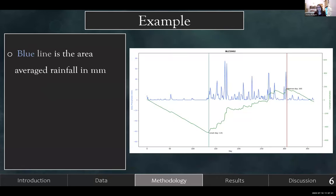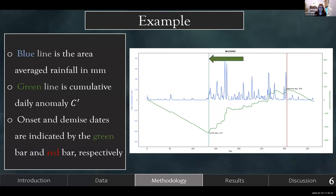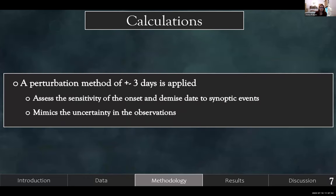This is best displayed graphically. The blue line is the area-average rainfall in millimeters, and the green line is the cumulative anomaly. The onset and demise dates are indicated by the green bar and the red bar, respectively. The onset date is the minimum of the cumulative anomaly, and the demise date is the maximum — the rainy season lies between these two. This example is Belize in 2022. Additionally, a perturbation method of plus or minus three days is applied, which assesses the sensitivity of the onset and demise dates to synoptic events and mimics uncertainty in the observations.